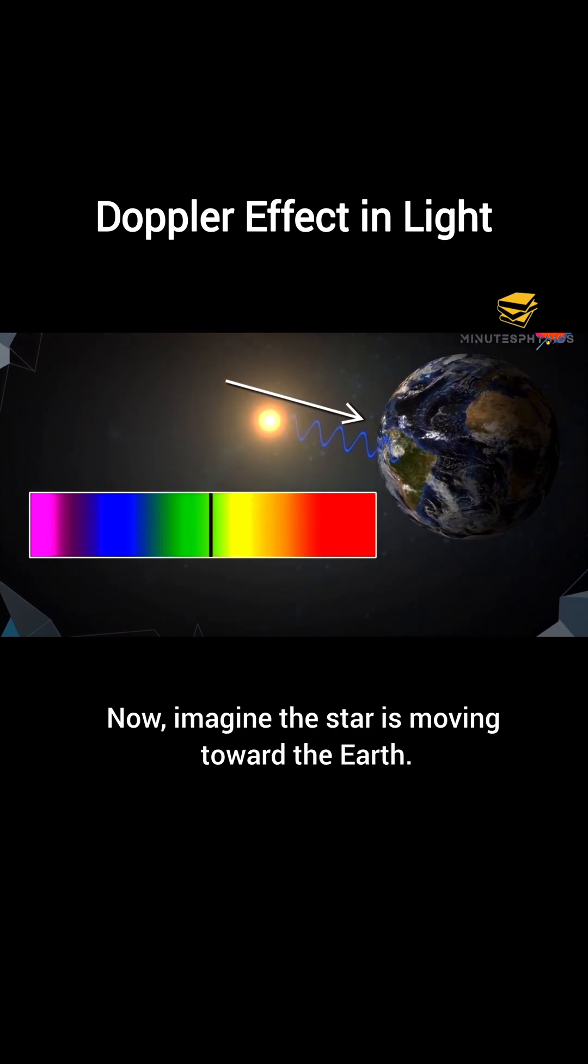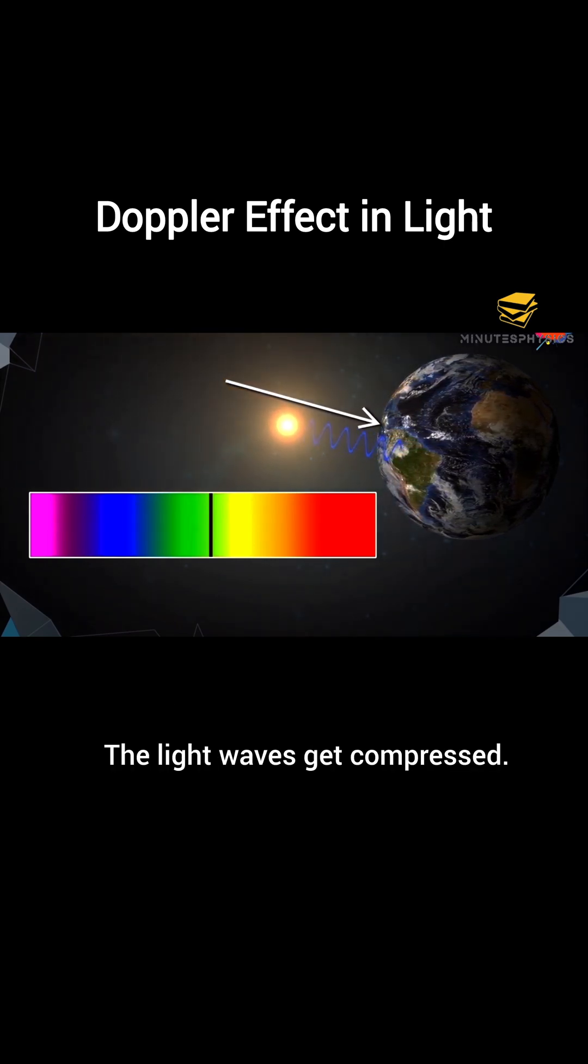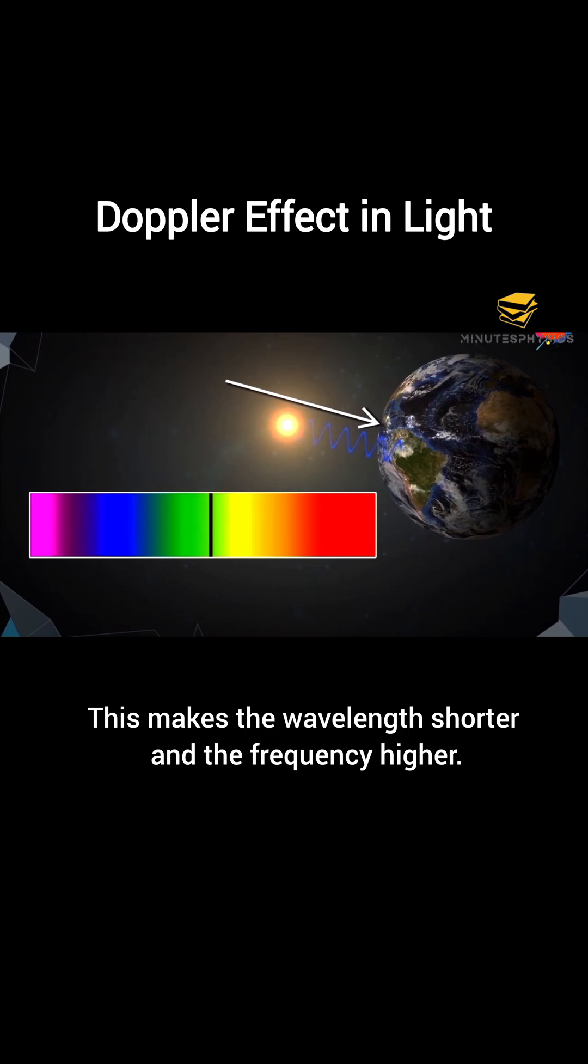Now, imagine the star is moving toward the Earth. The light waves get compressed. This makes the wavelength shorter and the frequency higher.